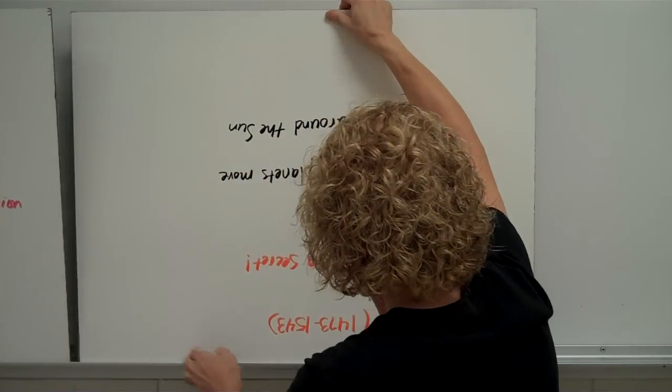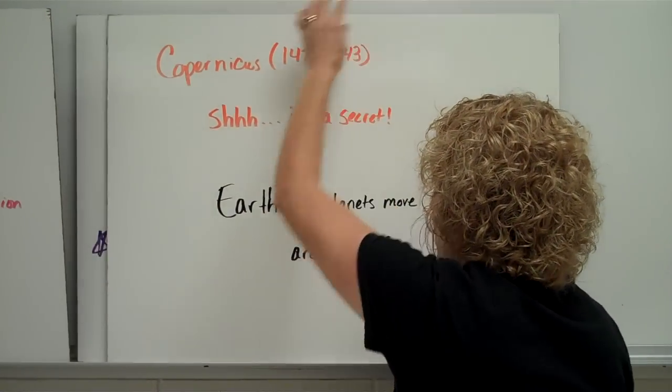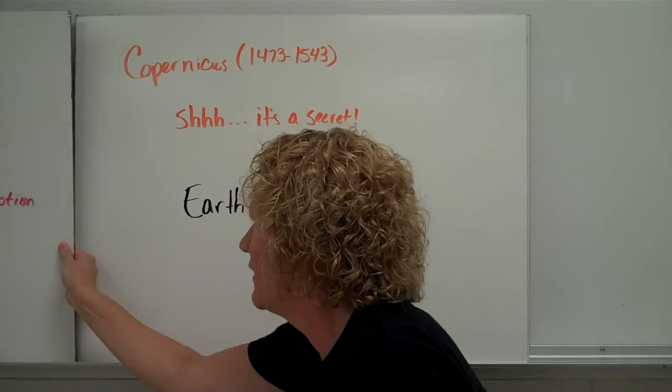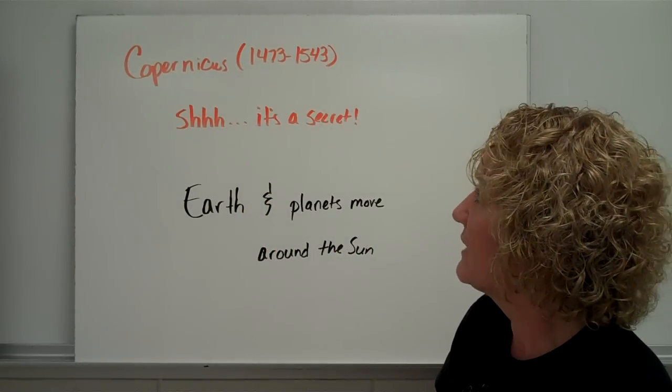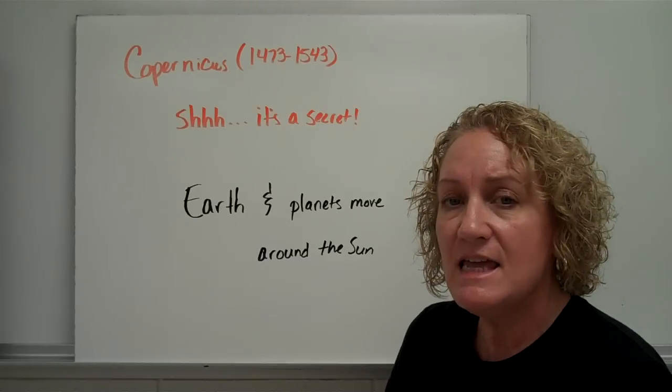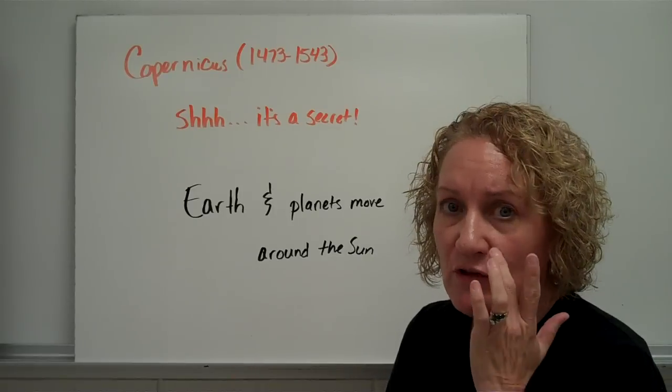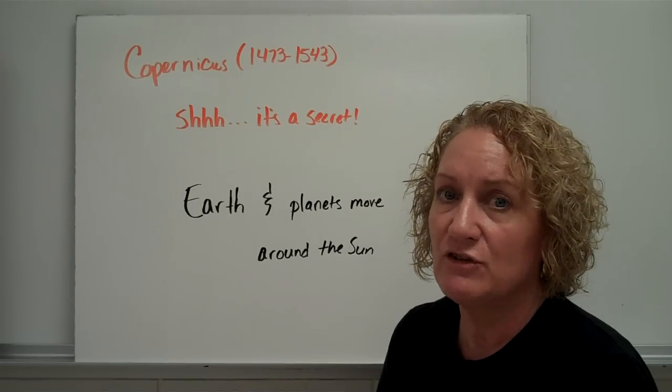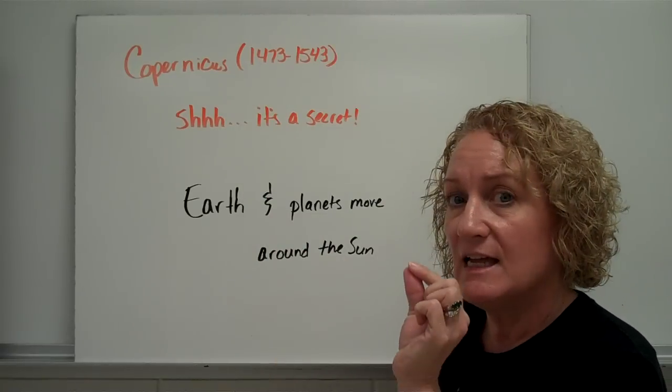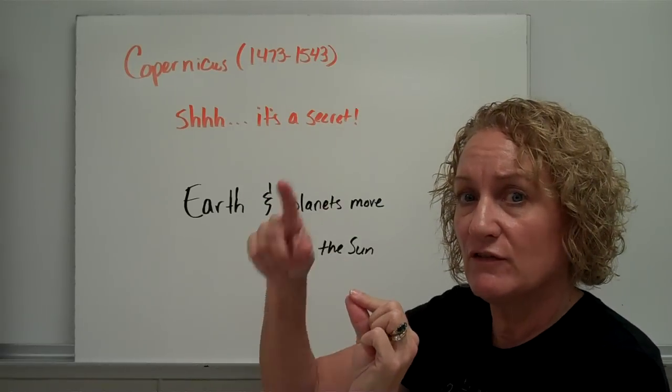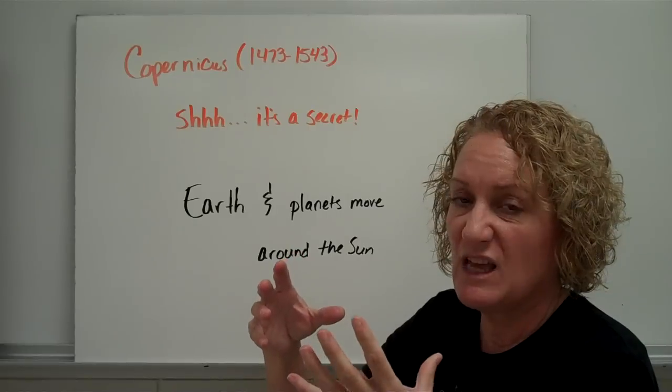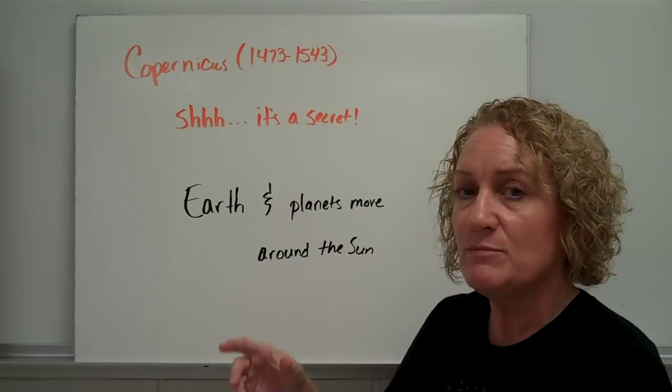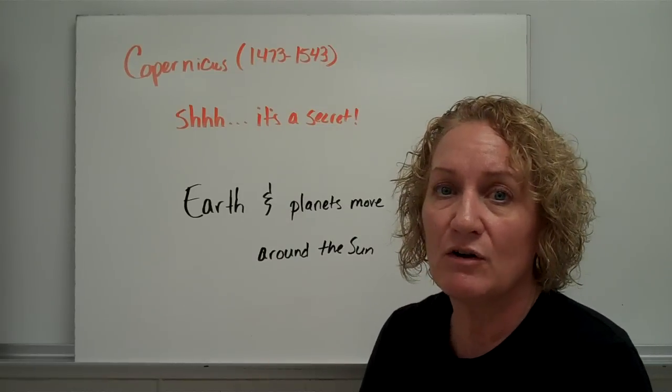Let's jump ahead a little bit to Copernicus. Copernicus was around a lot later than Aristotle was. And he came up with some very revolutionary ideas. So revolutionary that if he went public with it, he would have been in big trouble. So he kept it a secret and he said, it's not that the Earth is the center of the universe and things revolve around it. The center of our solar system, things revolve around it. But rather, the Earth and the planets move around the sun. That was unheard of.